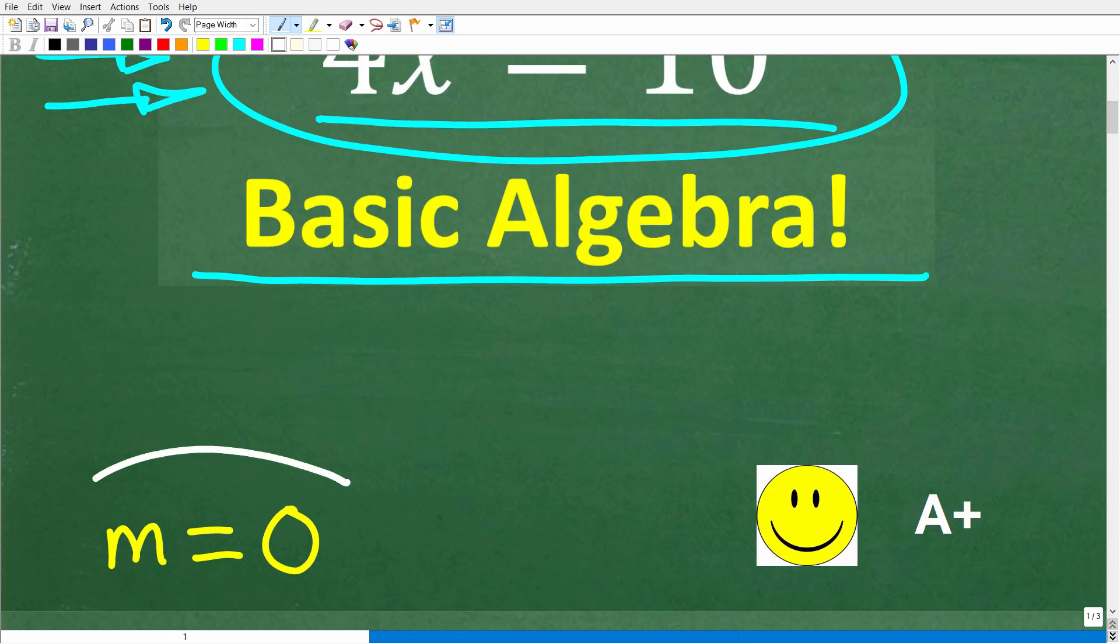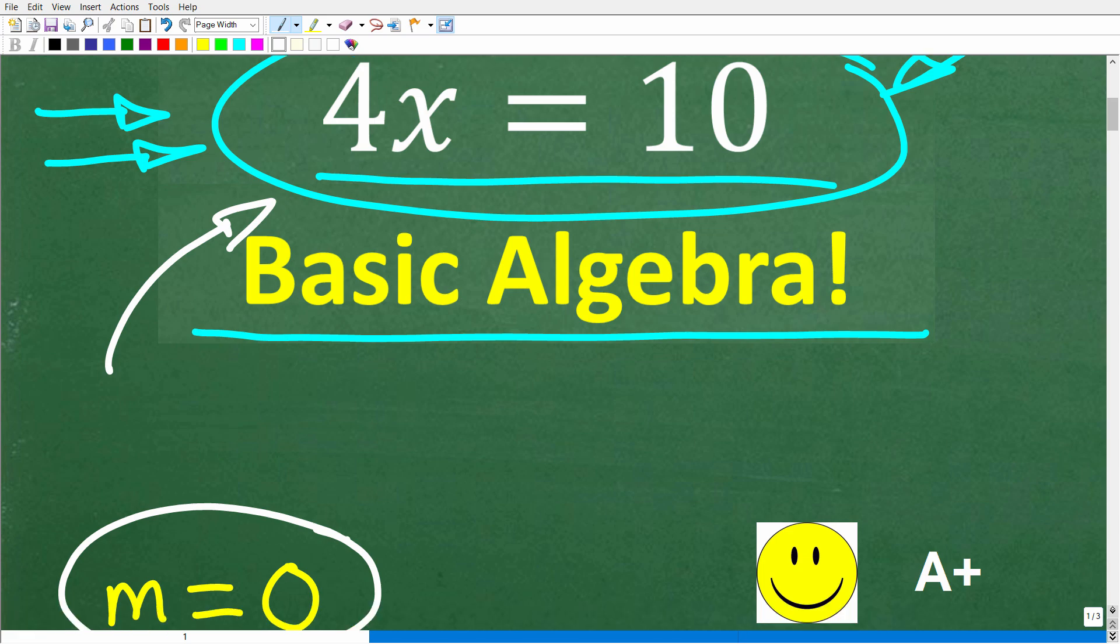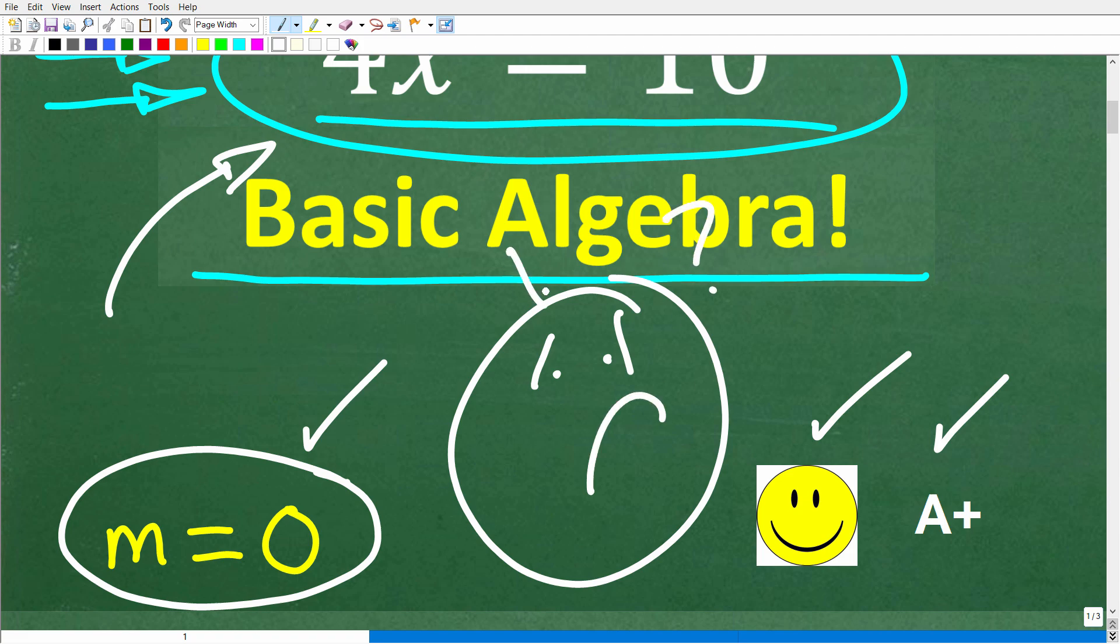The correct answer is 0. So the slope of a line that is perpendicular to this line, its slope would be 0. If you understood the question and you got the right answer, you'd definitely get a happy face and an A+. If you don't even understand the question, this is not that difficult.